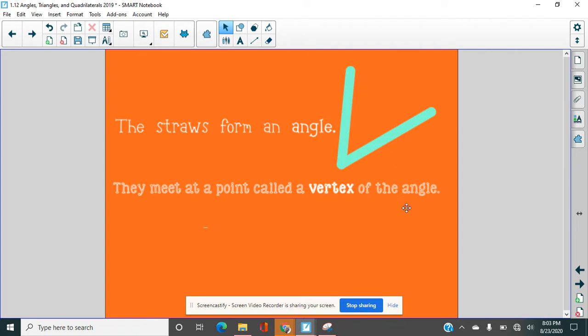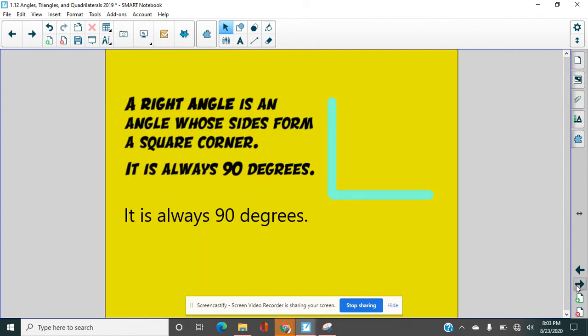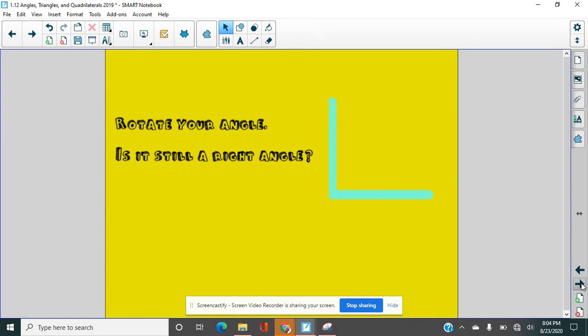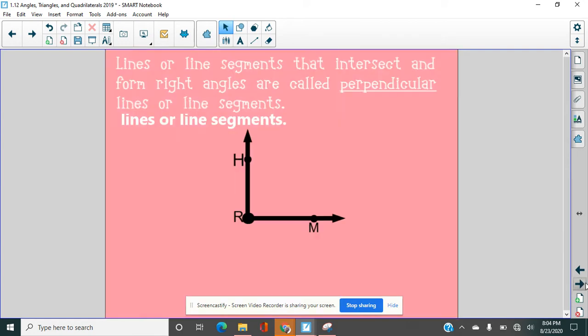Whenever you see straws in this lesson, this is what I want you to use instead. We can make a right angle. Take your straws and form them into a right angle like this. A right angle is going to cross at a square corner, or also called a 90-degree angle. A right angle is always 90 degrees. Now, if we turn our angle, do we still have a right angle? Yes, of course we do, because we still have a 90-degree angle.